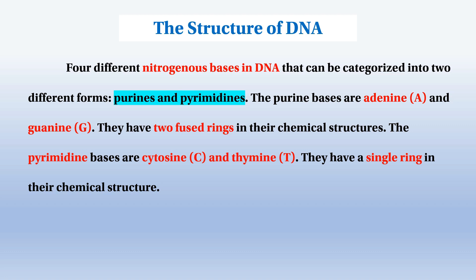The purine bases are adenine (A) and guanine (G). They have two fused rings in their chemical structure — a double ring structure. The pyrimidine bases are cytosine and thymine. They have a single ring in their chemical structure. Pyrimidine is a single ring structure of nitrogen base.